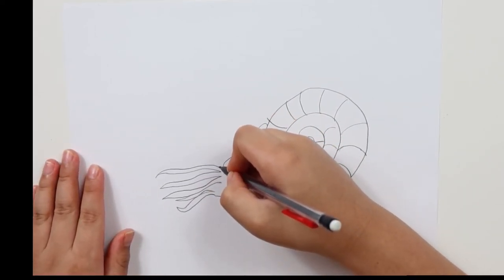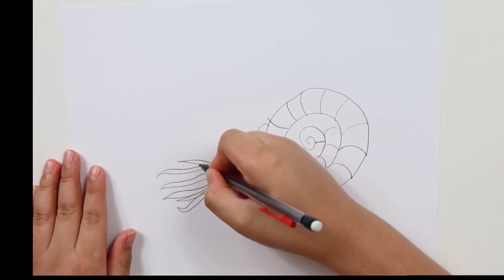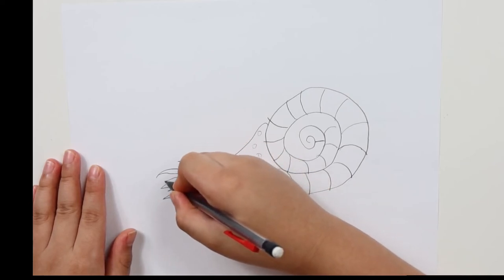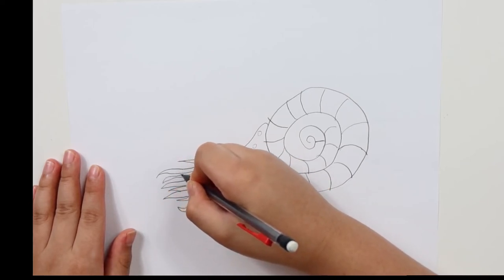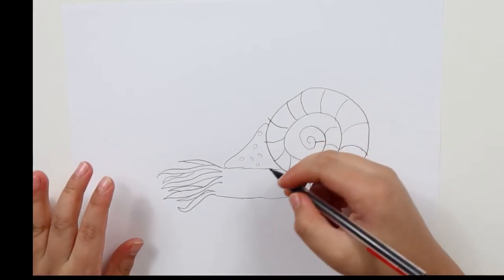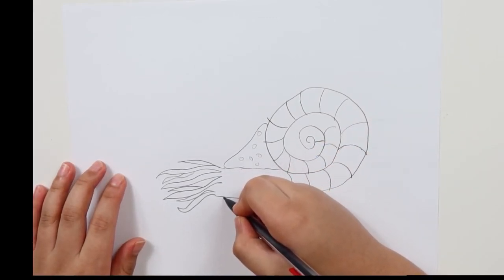If you want to add more tentacles you can just do this and add more. I don't really know how many tentacles you should draw, so just draw about 10. Then back down here you want to draw a siphon.